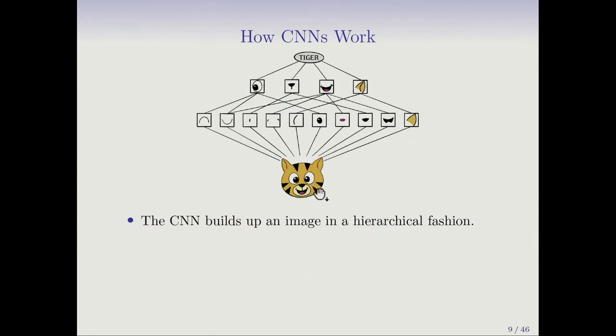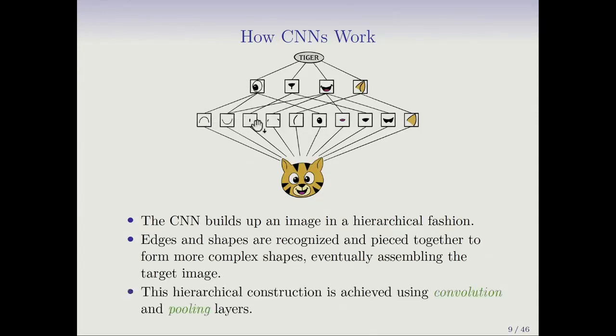This is a schematic that gives intuition of how CNNs work. Here we've got a cartoon image of a tiger. The CNN builds up an image in a hierarchical fashion. First, it tries to identify little shapes or color splotches or edges in the image, but small. You can see it's picked up an ear, part of the mouth, a bit of red for the tongue. Then, going up the layers, these are used as building blocks to build up more composite aspects, eventually assembling the target image. This hierarchical construction is achieved using convolution and pooling layers.